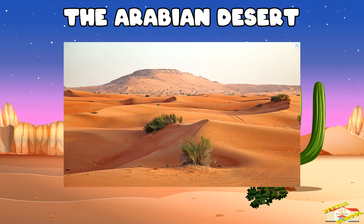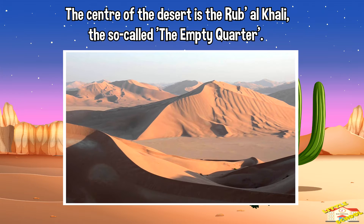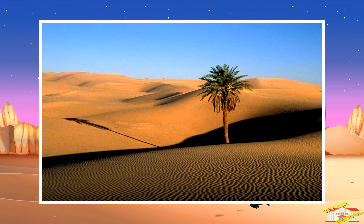The Arabian Desert. The center of the desert is the Rub' al Khali, the so-called Empty Quarter. The sand here has a red-orange color and the terrain is covered mainly by sand dunes, some gravel plains, and rocky plains.